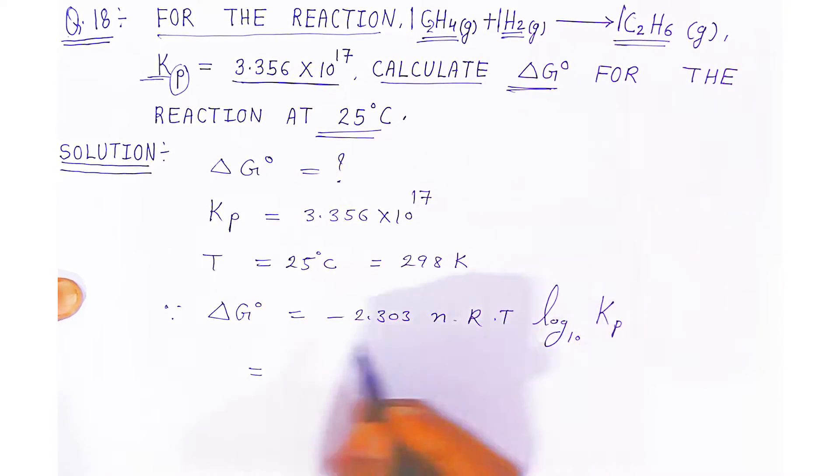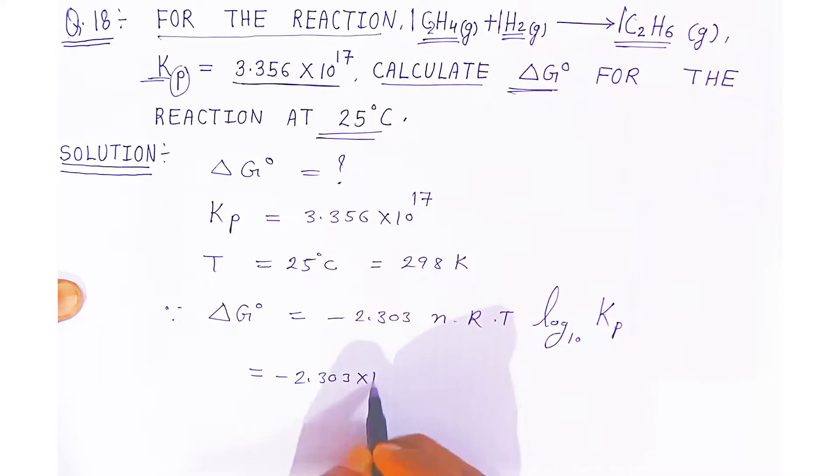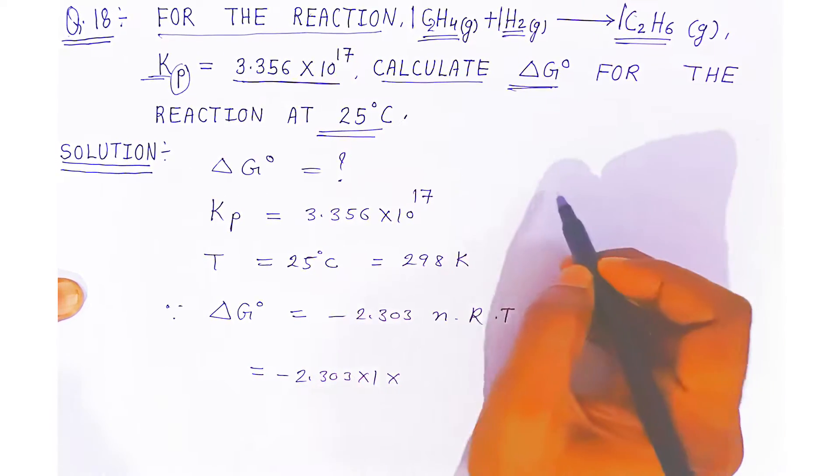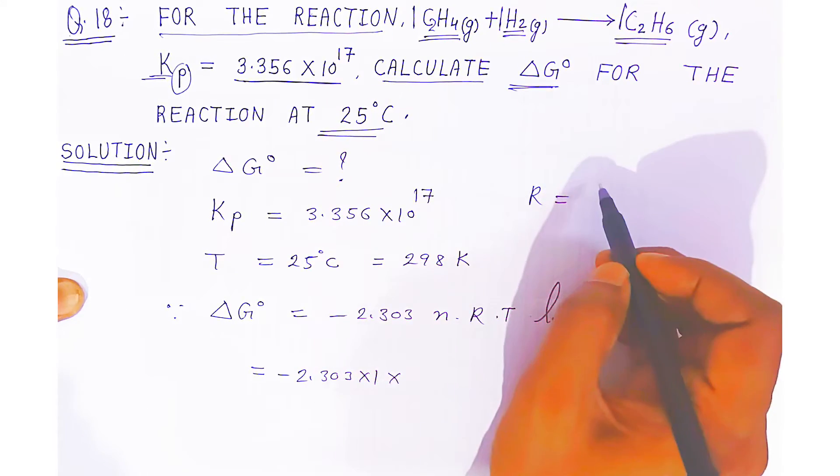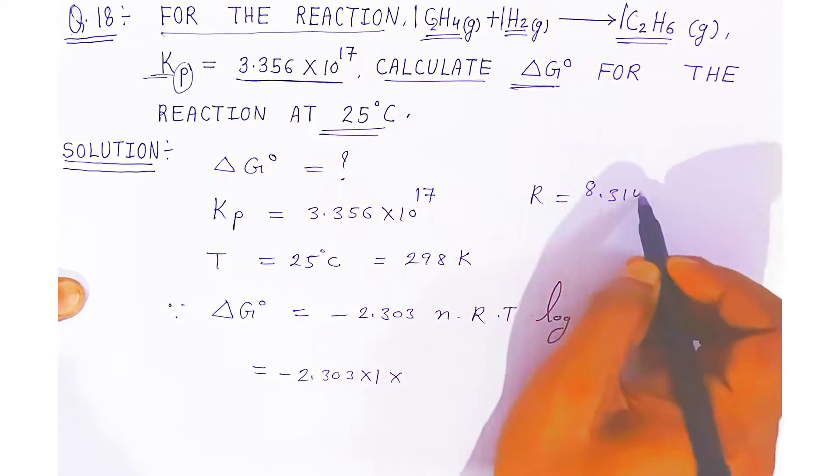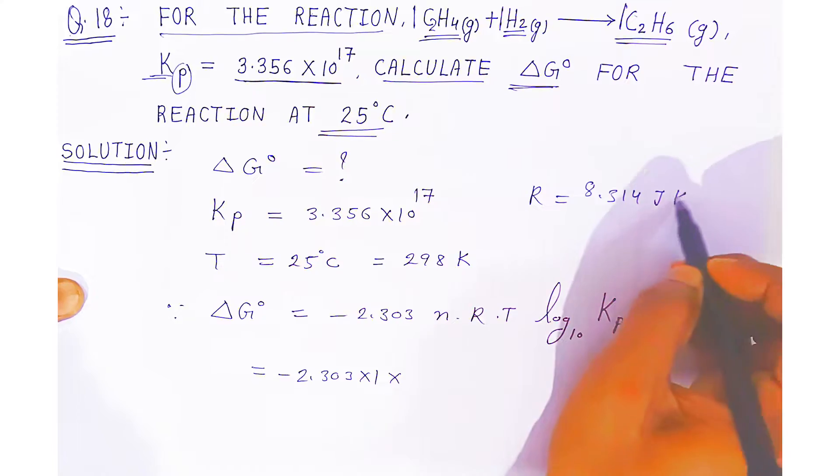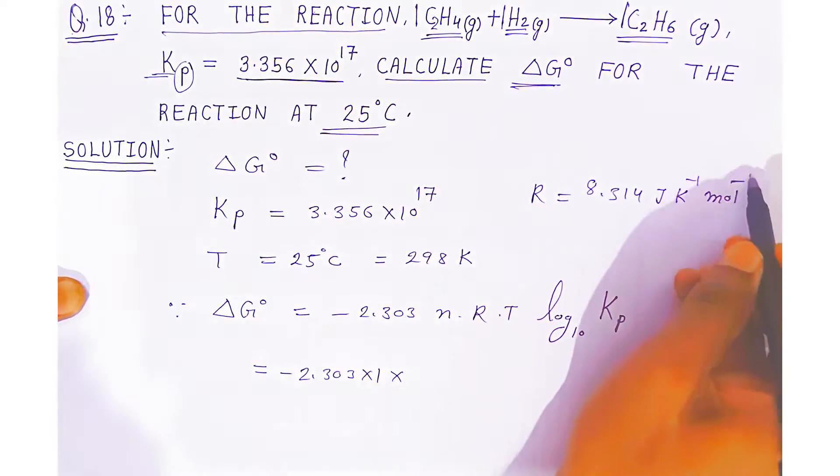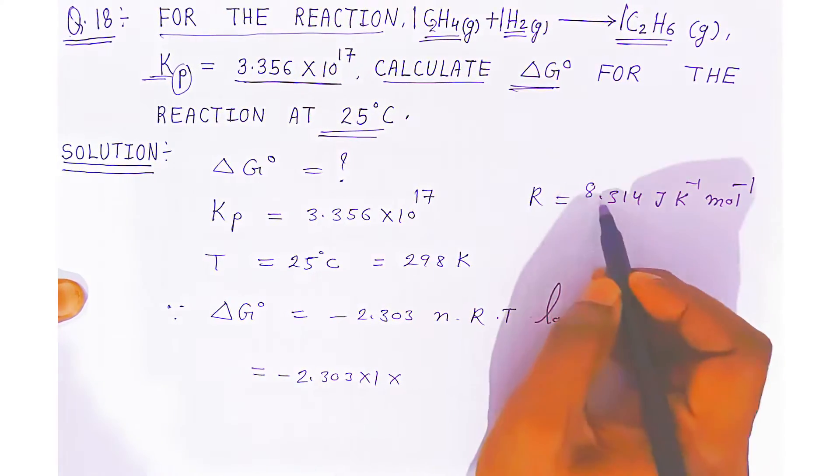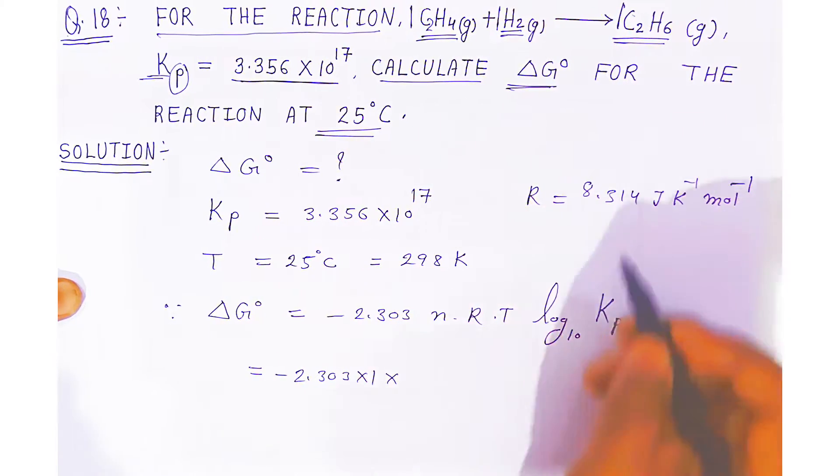So just put the value: -2.303 × 1 × R value, which is 8.314 Joules per Kelvin per mole. For 1 mole, the standard gas constant is 8.314 Joules per Kelvin per mole.